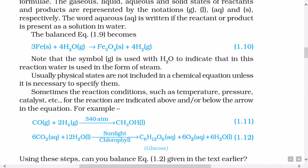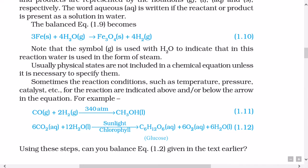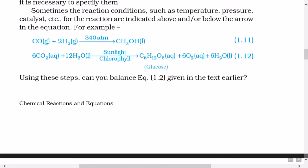Note that the symbol (g) is used with H2O to indicate that in this reaction water is used in the form of steam. Usually physical states are not included in a chemical equation unless it is necessary to specify them. Sometimes the reaction conditions such as temperature, pressure, catalyst, etc. for the reaction are indicated above and or below the arrow in the equation. For example, CO(g) plus 2H2(g) gives in the presence of 340 atm pressure CH3OH(l). And 6CO2(aq) plus 12H2O(l) in the presence of sunlight and chlorophyll gives C6H12O6 which is glucose (aq) plus 6O2(aq) plus 6H2O(l). Using these steps you can balance equation 1.2 given in the text earlier.